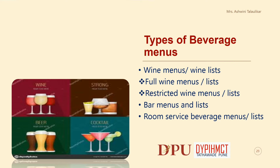The large display of menus and prices would be in a general type of bar where everyday drinks are served. The small printed menu list would be found in lounge and cocktail bars. Room service beverage menus and lists depend on the size and type of room service and on the standards of the hotel and the level of room service offered.